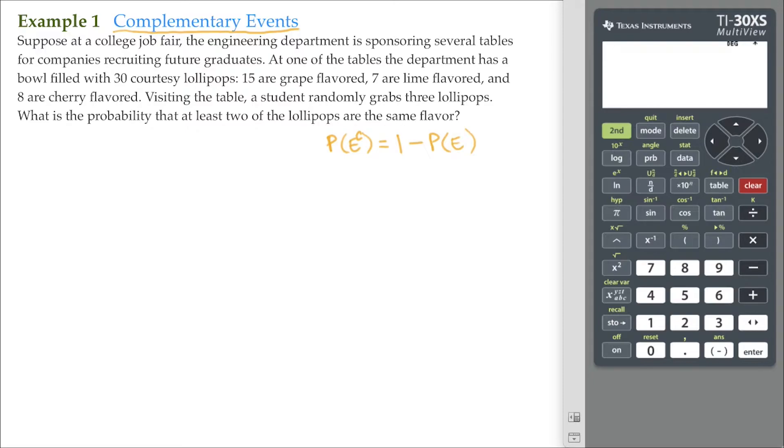And that's what this example demonstrates. It says, suppose at a college job fair, the engineering department is sponsoring several tables for companies recruiting future graduates. At one of the tables, the department has a bowl filled with 30 courtesy lollipops. Fifteen are grape flavored, seven are lime flavored, and eight are cherry flavored.